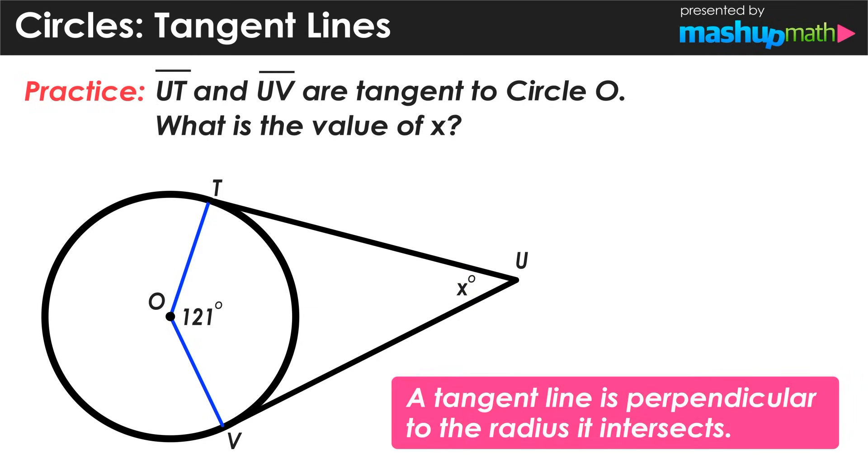Now we know that UT and UV are tangent lines to circle O, and we know that a tangent line is perpendicular to the radius it intersects. So we can conclude that angles T and V are right angles and have measures of 90 degrees.